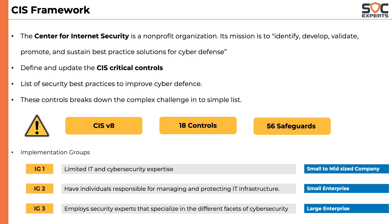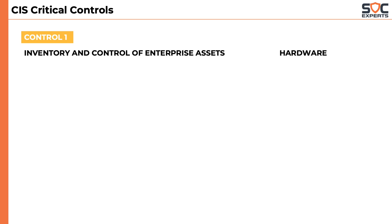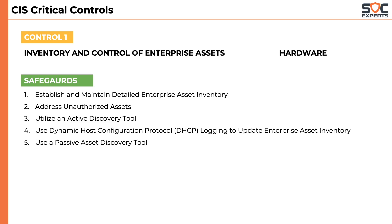It is now time to look at the 18 controls of the CIS framework. The first control is inventory and control of enterprise assets. It makes sense — if you want to secure anything, first you have to know what you are protecting. So it becomes necessary to actively manage all enterprise assets like end-user devices, including portable and mobile devices, network devices, IoT devices, servers, etc. There are five safeguards defined within the first control, which highlight maintaining an inventory, addressing unauthorized assets, using active and passive discovery tools, and the use of DHCP.